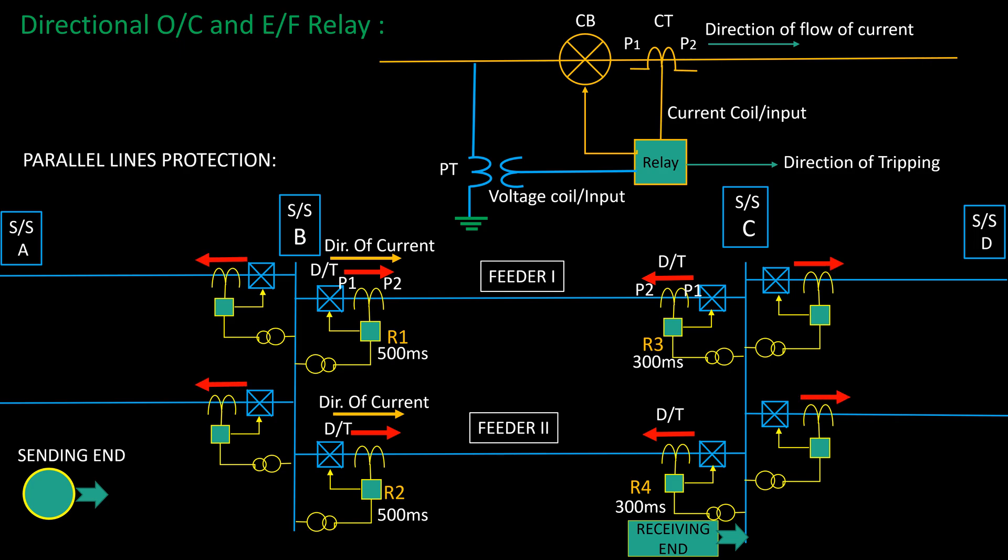But when fault occurs at any feeder, suppose at feeder number 2, instantaneously fault current flows from substation B to fault point, and R2 issues a tripping of circuit breaker under relay R2 as the direction of flow of current and direction of tripping has become same.